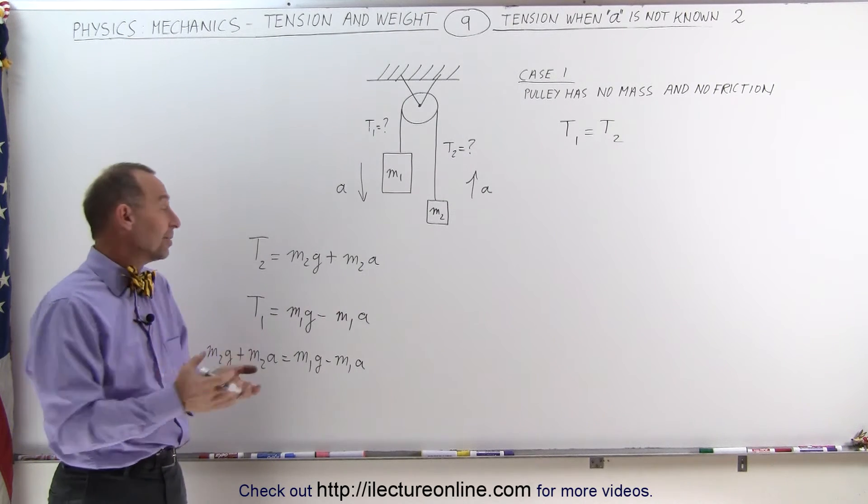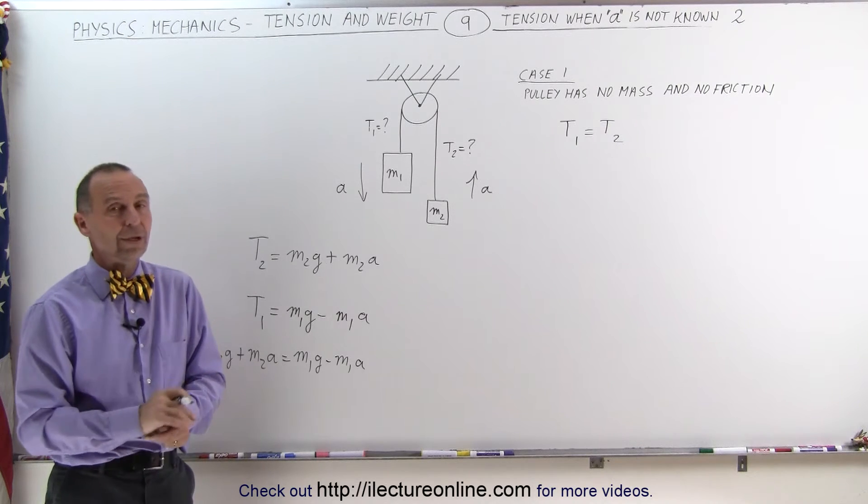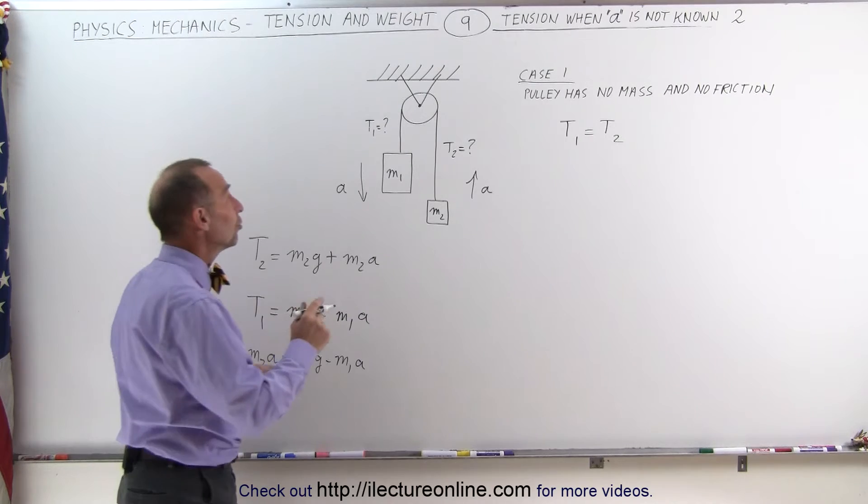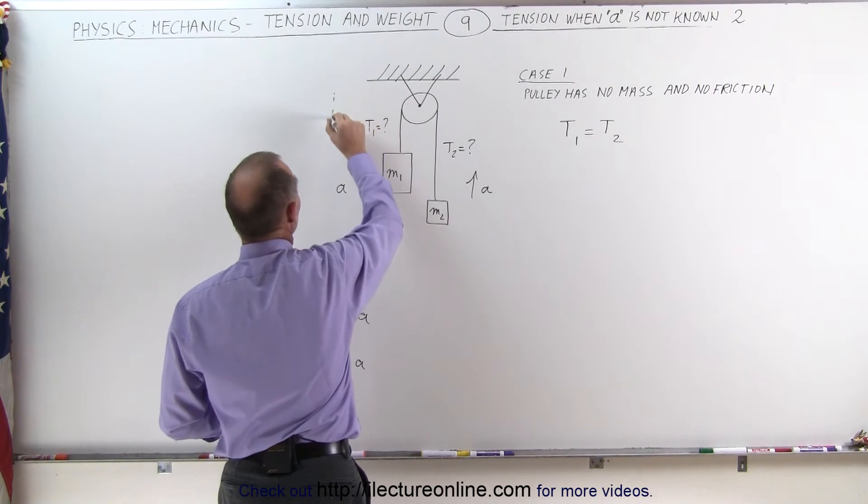Now how do we find the solution for T1 and T2? Just like before, we need to know the acceleration. To find the acceleration we can then assume this to be one complete system.